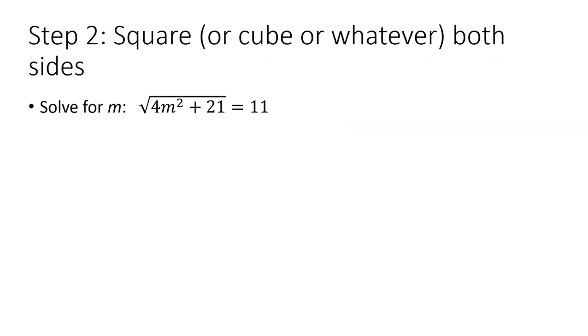Next, because it's a square root, we will square both sides. Now the left-hand side is just what was in the radical house, in that radicand, and it's 4m squared plus 21. The right-hand side is now 11 squared, 121.